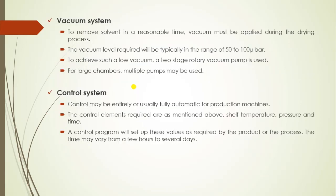Next is the vacuum system. To remove solvent in a reasonable time, vacuum must be applied during the drying process. If we do not apply vacuum, it will require more time for drying of the substance. The vacuum level required will typically be in the range of 50 to 100 microbar. To achieve such a low vacuum, a two-stage rotary vacuum pump is used. For large samples, multiple pumps may be used.